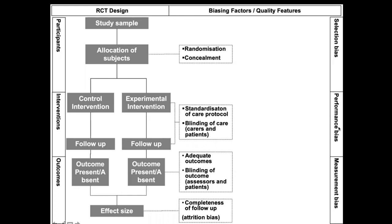With respect to performance bias, we assess whether the groups constituted at the beginning of a study were treated differently in ways other than the assigned intervention and control. This problem is prevented by blinding both the participants and the carers. Measurement bias is captured by problems that may arise in classification of the outcome, and is prevented by using blind outcome assessors. We can also use objective outcomes so that subjectivity does not play a role and the absence of blinding may not adversely affect measurement.